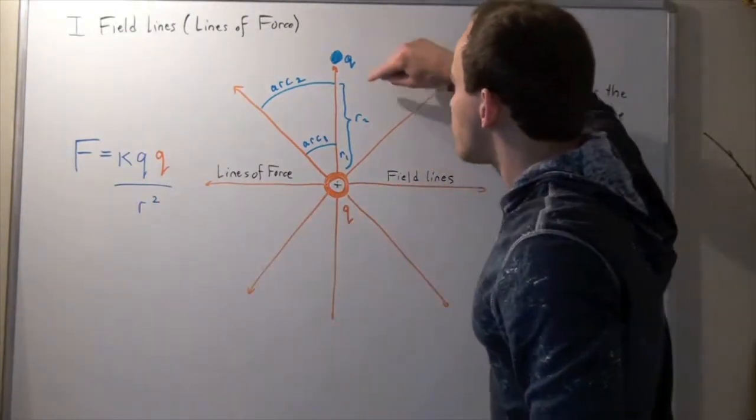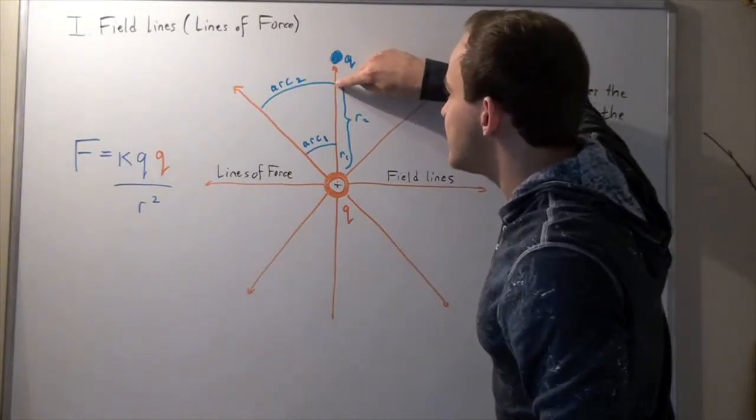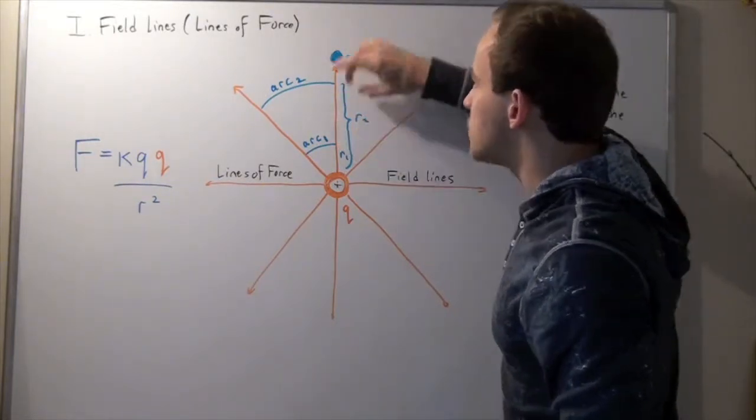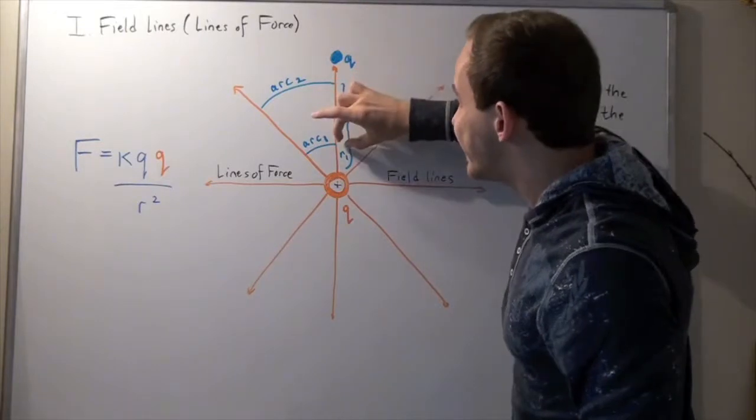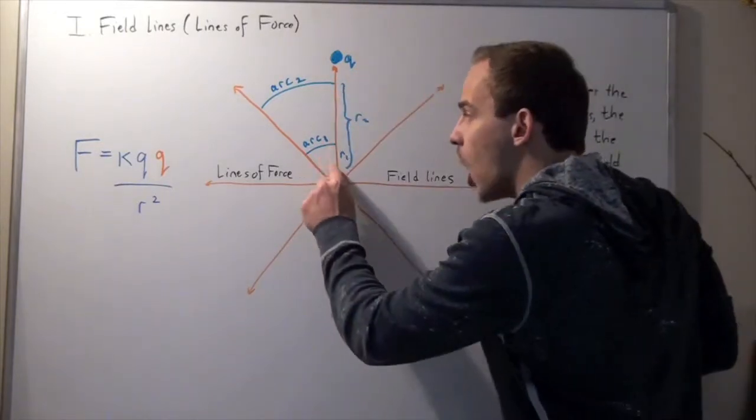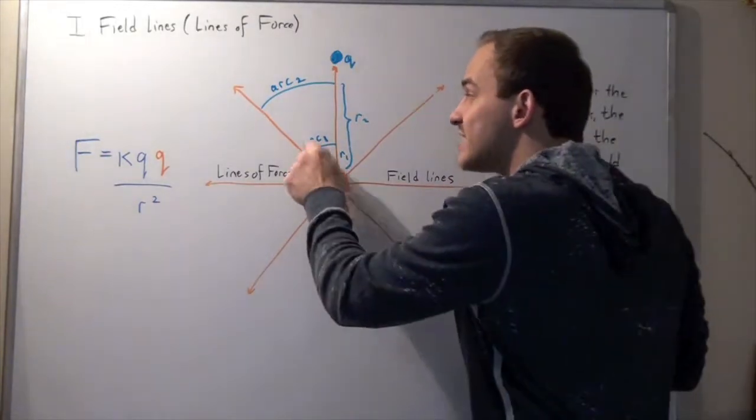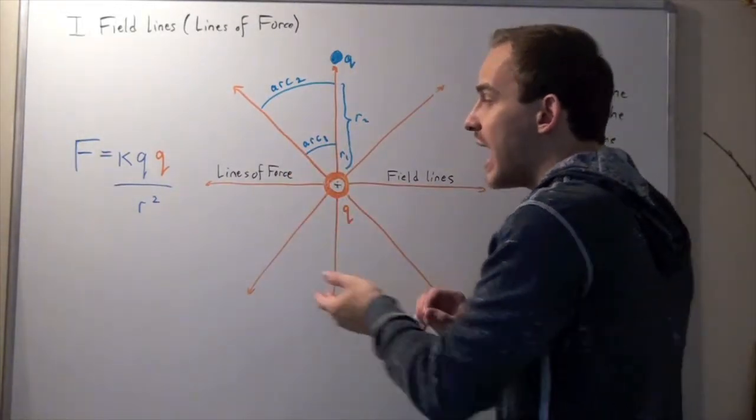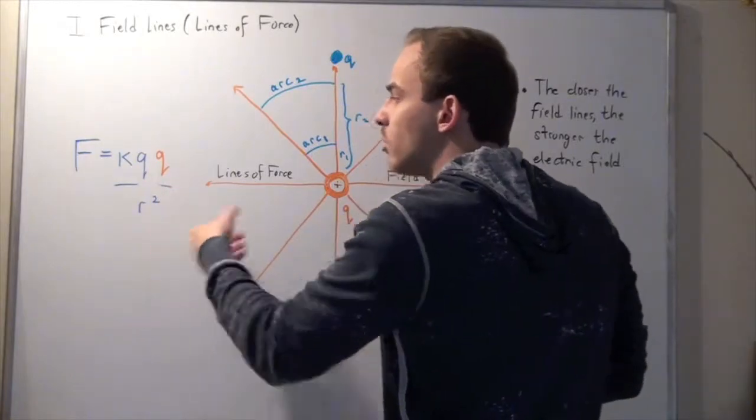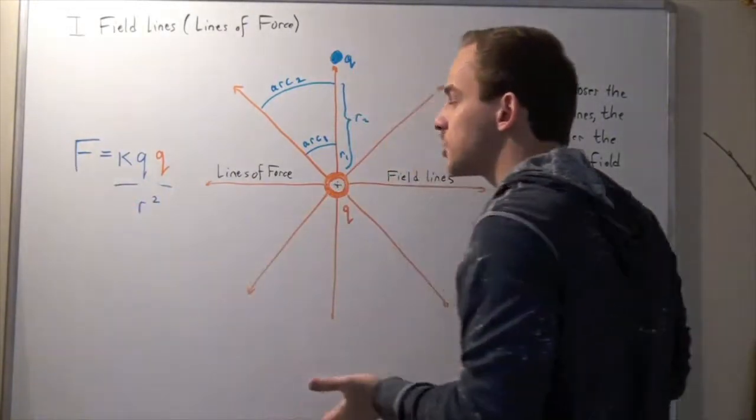In other words, as we go from this distance to this distance, suppose I move my point charge to this distance. My R, my distance between this charge and this charge becomes smaller, this arch becomes smaller, and our denominator becomes smaller means that our force becomes larger.